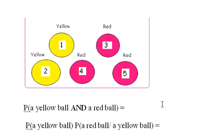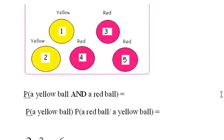So drawing out a red ball is no longer three-fifths, it's something else. And so we have to be careful with this. Since they're not independent, we have to use the formula, the full formula with the conditional probability.